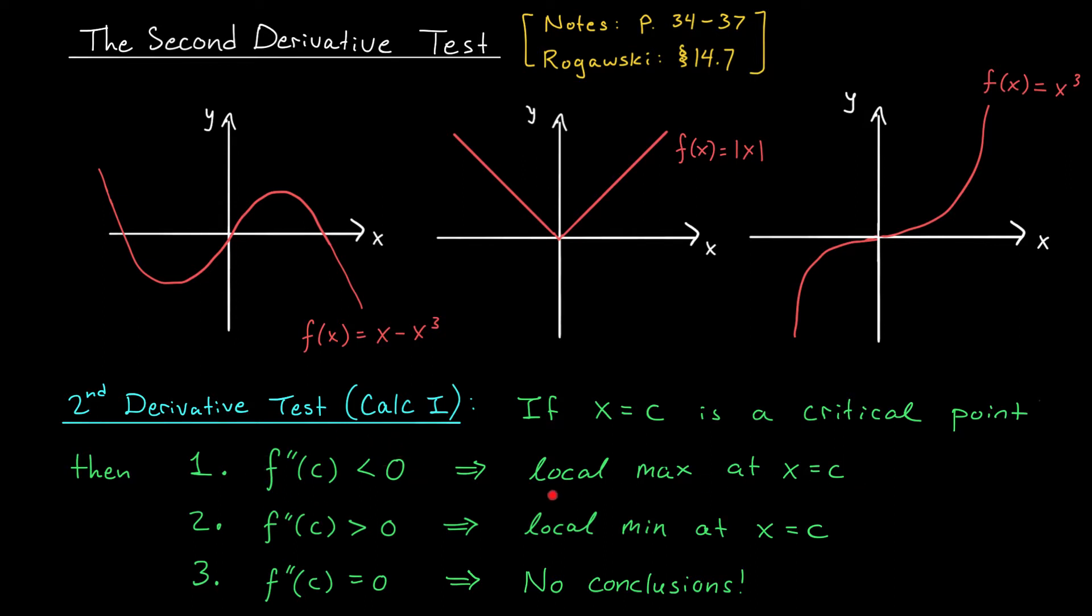if the second derivative at c is negative, your function has a local max at x equals c. The intuition is that if the second derivative is negative, your function is concave down, looks something like this. You can see here we have a maximum.